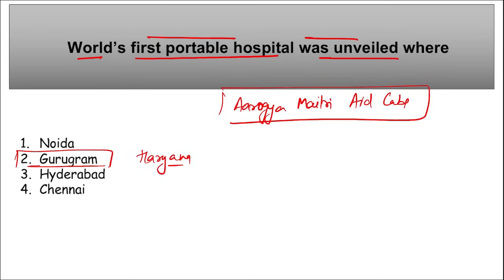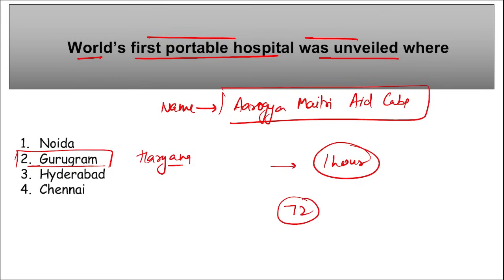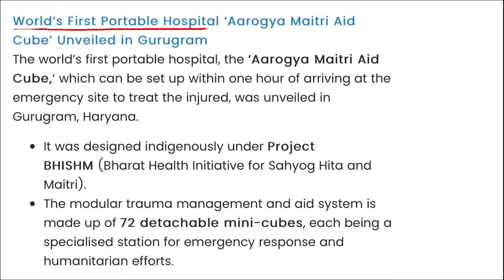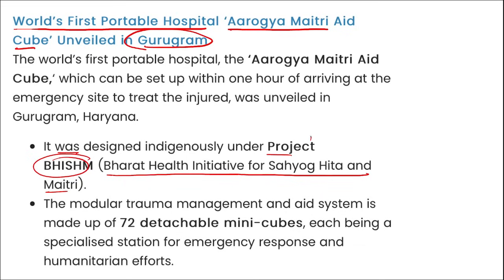यह India's first portable hospital है — Arogya Maitri Aid Cube। एक घंटे के अंदर किसी भी emergency site पर यह hospital set up किया जा सकता है। 72 detachable mini cubes से जो कि specialized stations हैं for emergency response। इससे bullet injuries, burns, chest injuries, fractures, bleeding — यह सारी चीज़ें treat की जा सकती हैं। यह world का पहला portable hospital है जो Gurugram, Haryana में unveil किया गया। It was designed under Project BHISHM — Bharat Health Initiative for Sahayog, Hita and Maitri।